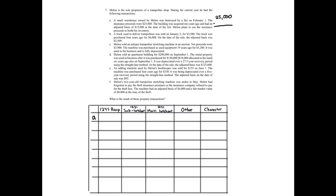The first step in a property transaction is always to calculate the realized gain or loss. So $25,000 amount realized minus the $15,000 adjusted basis gives us a $10,000 gain. Step one complete.